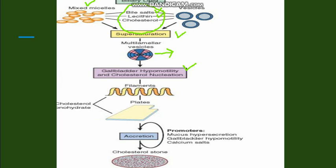Gallbladder hypomotility, due to various reasons, leads to stasis of bile in the gallbladder and no passage of biliary sludge into the intestine. This promotes the formation of cholesterol stones, which are cholesterol monohydrate crystals that accrete to form the stone. The promoters for formation of cholesterol stones are gallbladder stasis and, very importantly, mucus hypersecretion, which traps the crystals and forms the stones.